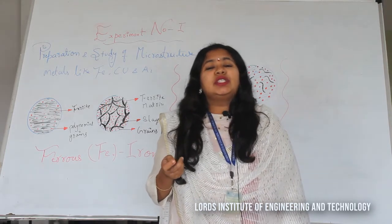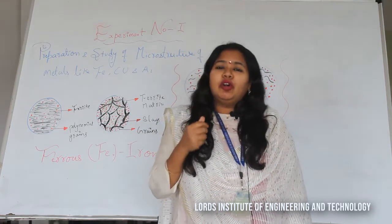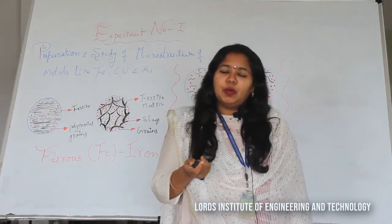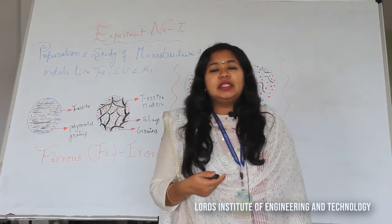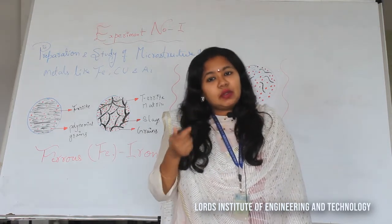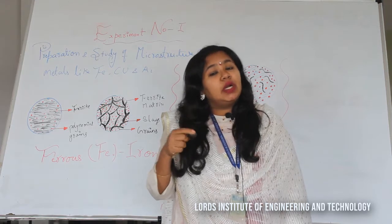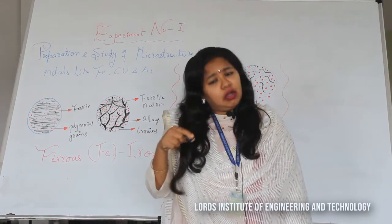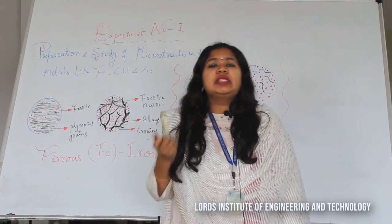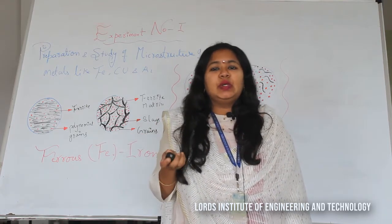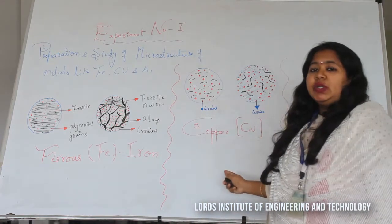How does the microstructure actually vary? For example, for copper, aluminium, brass, bronze, or nanomaterials — how does the microstructure vary from one metal to another, to non-metals, alloys, or nanomaterials? That is what we are going to observe in today's lecture.